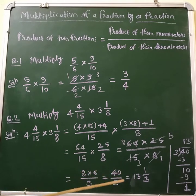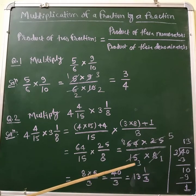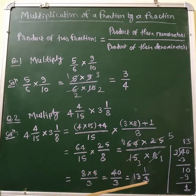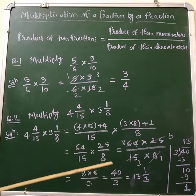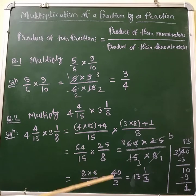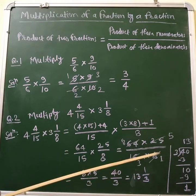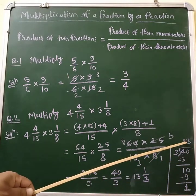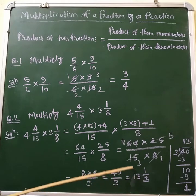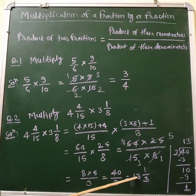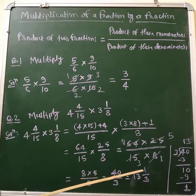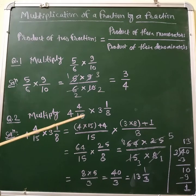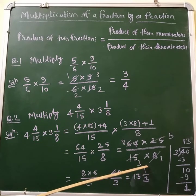Now 40/3 is an improper fraction, so we convert it into a mixed fraction. 40 is the dividend and 3 is the divisor. Dividing, the remainder is 1 and the quotient is 13. We write the mixed fraction in the form Q remainder/D. So Q is 13, R is 1, and the divisor is 3. The multiplication of 4 and 4/15 by 3 and 1/8 equals 13 and 1/3.